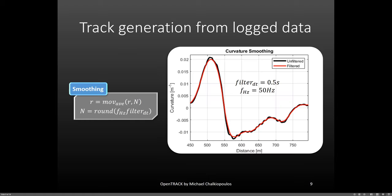For smoothing noisy data that come from the logger, I have included the moving average filter. This takes into account the filter DT variable which represents the time period that you want to take into account when you filter your data. And to convert this time variable to a unitless number so that we can use it inside the filter, we multiply it by the logging frequency and then round the result.